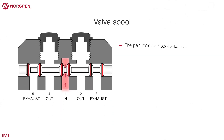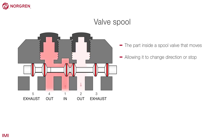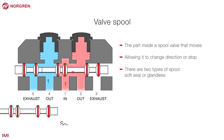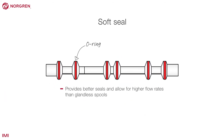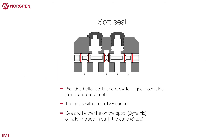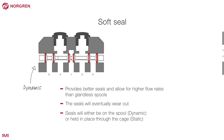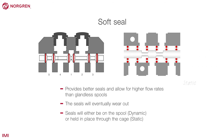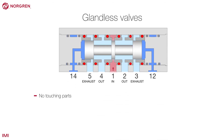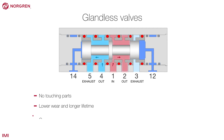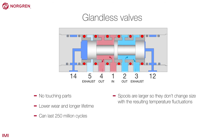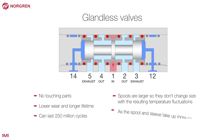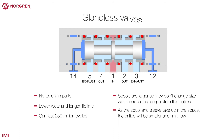A valve spool is the part inside a spool valve that moves, either allowing it to change direction or stop. There are two types of spool: soft seal or glandless. Soft seal spools use O-rings to create better seals and allow for higher flow rates than glandless spools, but the seals will eventually wear out. The seals will either be on the spool — referred to as dynamic — or held in place through the cage, referred to as static. Glandless valves have no touching parts, which means much lower wear and longer lifetime; typically a glandless valve can last 250 million cycles. Tight tolerances mean the spools are larger so they don't change size with temperature fluctuations, but the spool and sleeve take up more space, so the orifice will be smaller and limit flow.